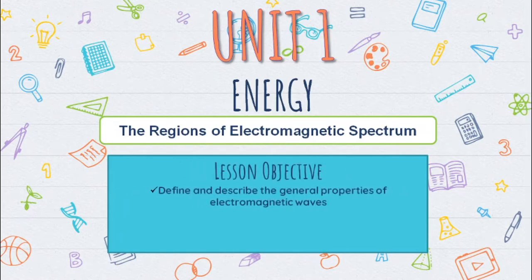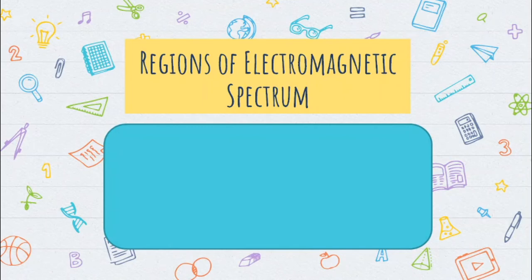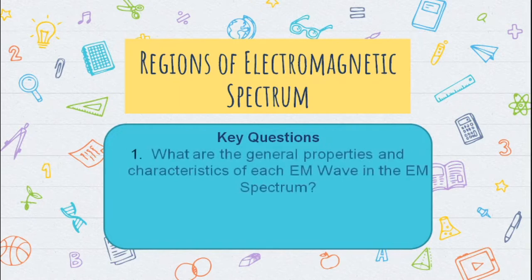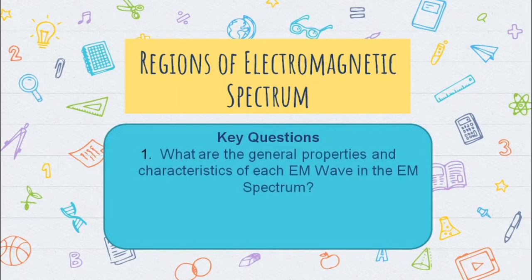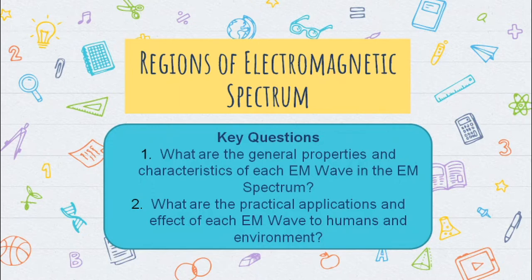In this lesson, you will learn how to define and describe the general properties of electromagnetic waves. You should be able to compare the relative wavelengths of different forms of electromagnetic waves. Before we proceed to the main topic, let us have our key questions first. The first key question is: what are the general properties and characteristics of each EM wave in the EM spectrum? The last key question is: what are the practical applications and effects of each EM wave to humans and environment? So at the end of this video, we should be able to answer those two key questions. Without further ado, let us start with our lecture video.